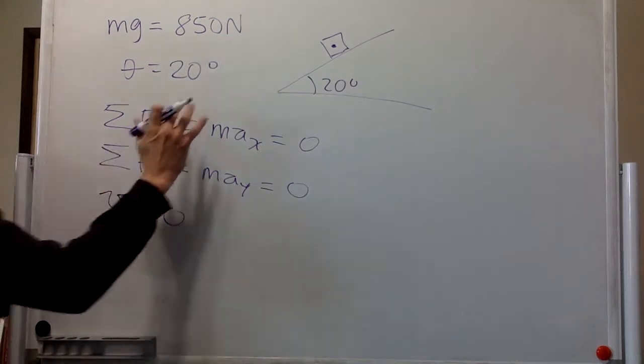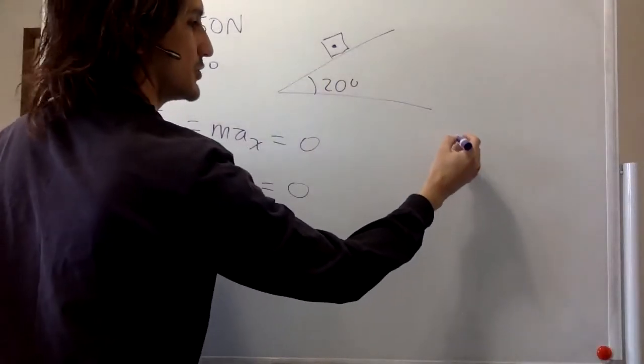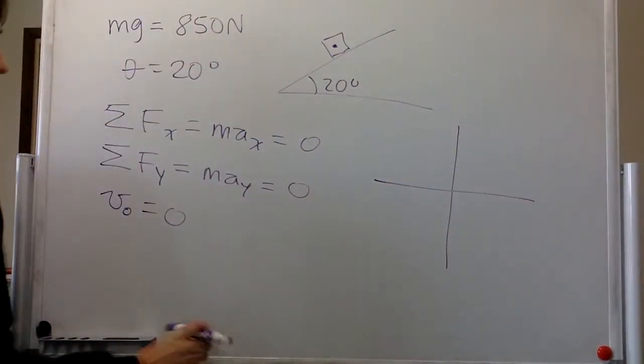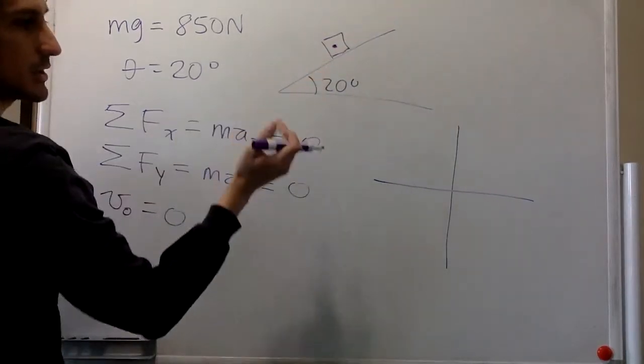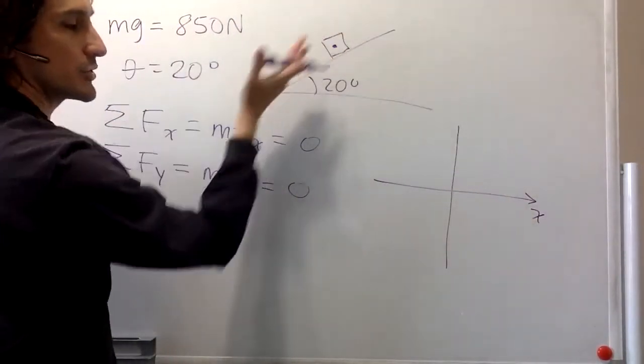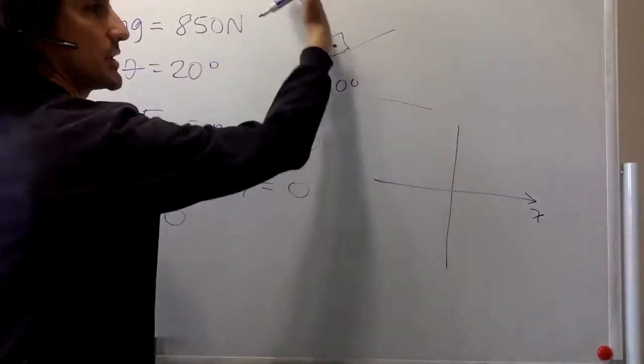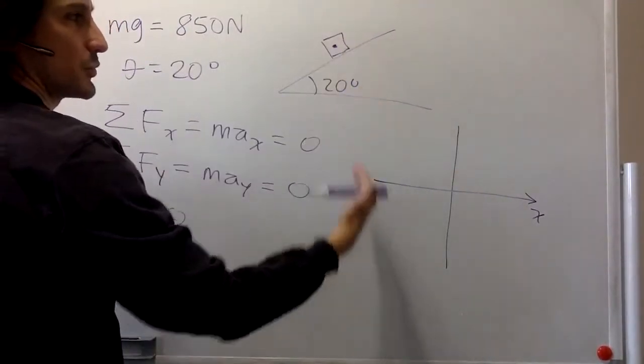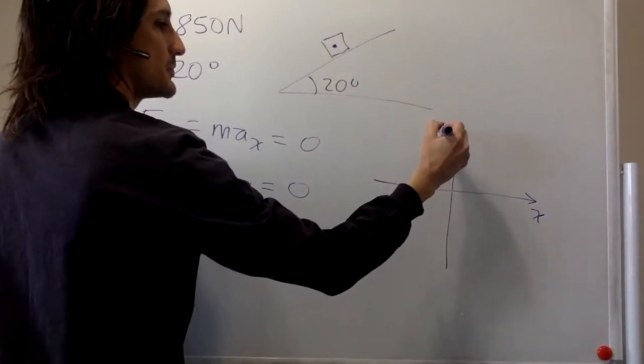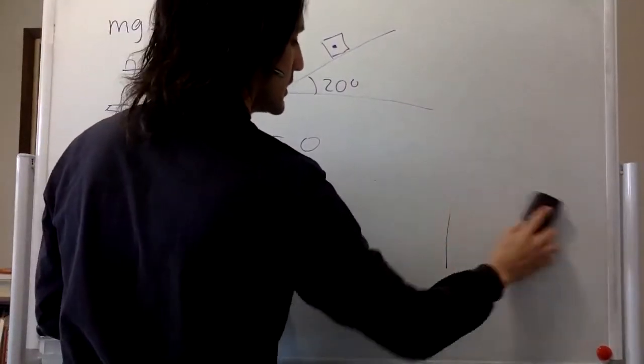So then we go from the pictorial representation to the free body diagram. We're going to align the x axis with the horizontal to eliminate as many angles as possible. And in that case, the normal is going to be just normal to the surface.